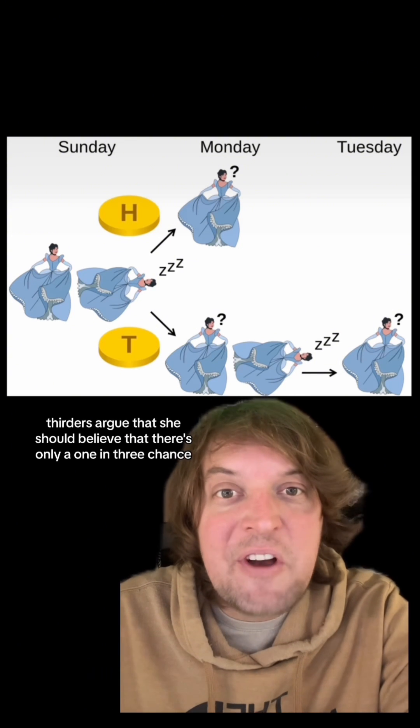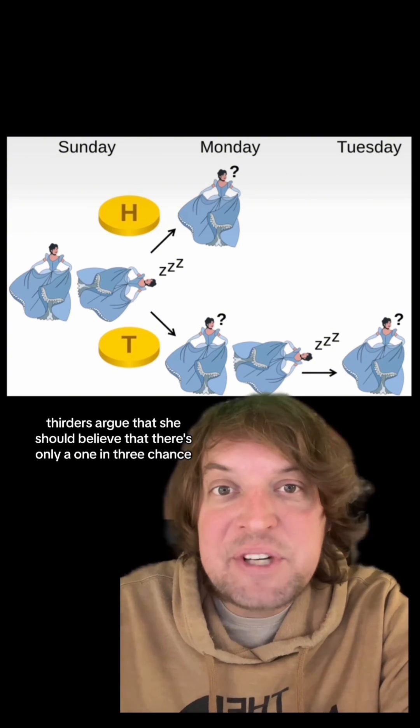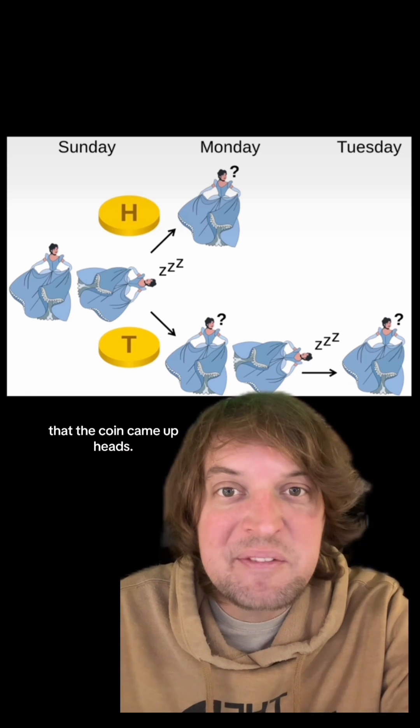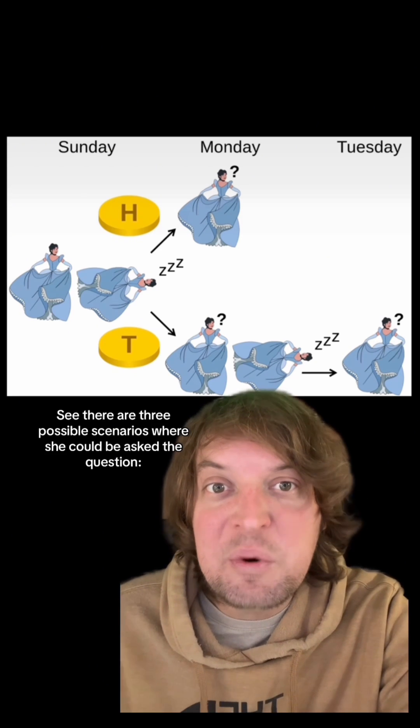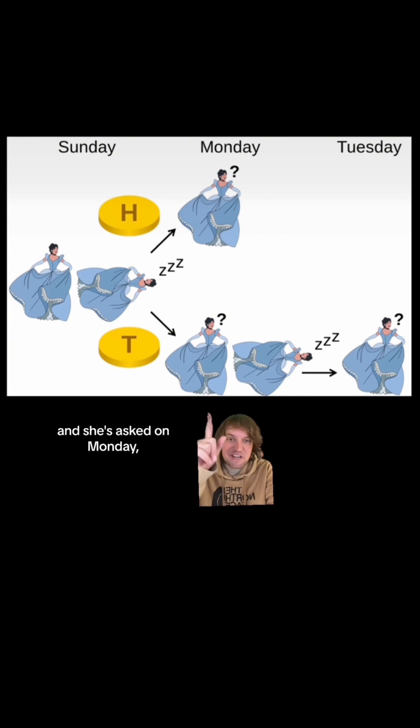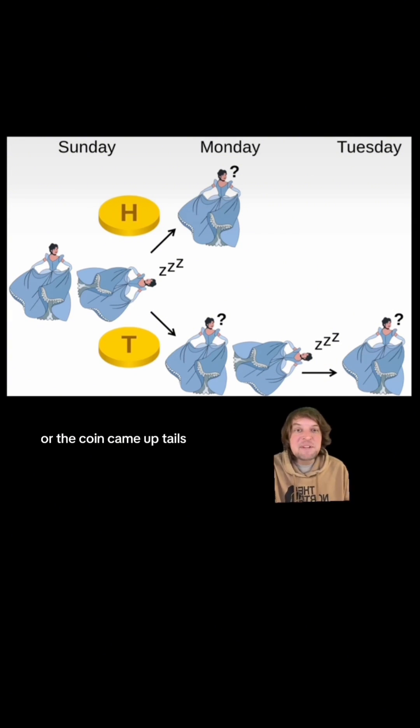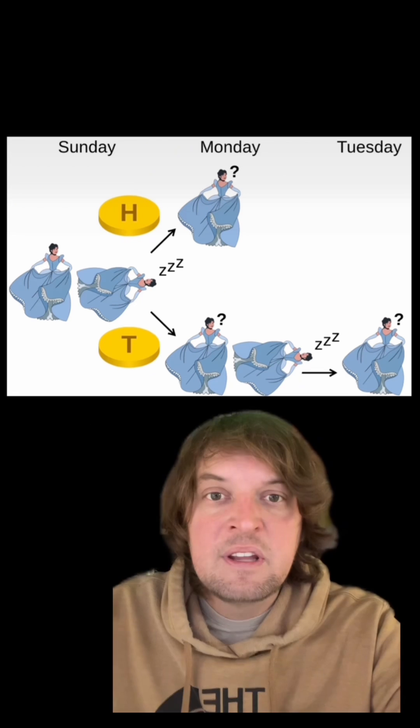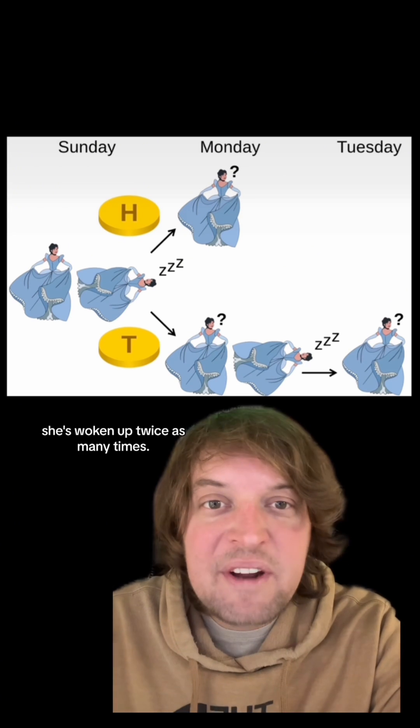However, thirders argue that she should believe that there's only a one in three chance that the coin came up heads. See, there are three possible scenarios where she could be asked the question: the coin came up heads and she's asked on Monday, the coin came up tails and she's asked on Monday, or the coin came up tails and she's asked on Tuesday. In the case of tails, she's woken up twice as many times.